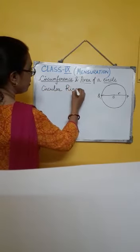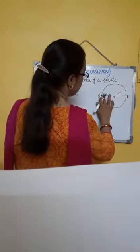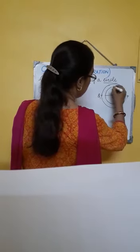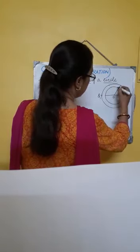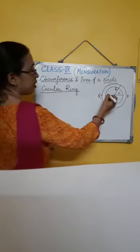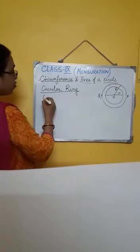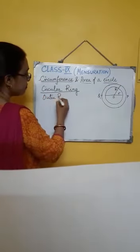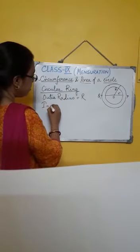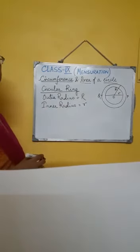Circular ring. In the case of a circular ring, there will be an outer boundary and an inner boundary. The outer radius is capital R and the inner radius is small r.